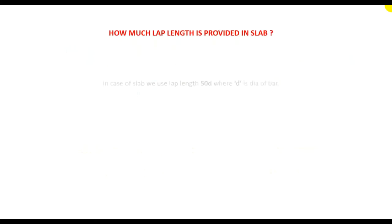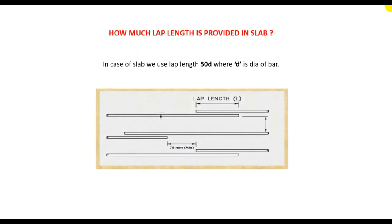So first, how much lap length is provided in a slab? In the case of a slab, we use a lap length of 50D, where D is the diameter of the bar. We have to use 50D lap length for slabs, and it should not be less than a minimum of 75 millimeters. This is the standard, though it can depend on different types of concrete grade according to the country code.